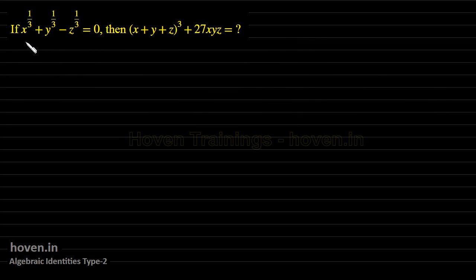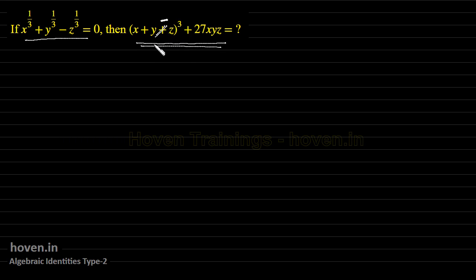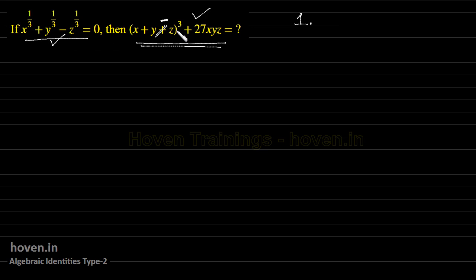This is our first question. It says x^(1/3) + y^(1/3) − z^(1/3) = 0. This is what has been given to us, and we have to find out the value of the expression. There is a slight misprint — it should be minus here, please take note of this. Since this question involves powers of 3 — this is 1/3, and on the other side it is a cube — this gives us a sufficient hint that the cube formula will be used.